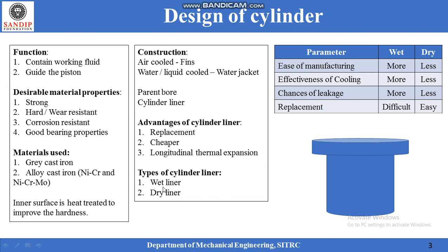Cylinder liners are of two types: wet and dry liner. When the cooling water is directly in contact with the liner it is called a wet liner. When the water jacket is not directly contacted by the liner it is called a dry liner. The difference between these two is mentioned in a table based on four parameters: wet liners are easy to manufacture and are effective in cooling since they are in direct contact with the water. But for the same reason, there are chances of leakage in case of a wet liner, and it makes replacement of the liner more difficult compared to the dry liner.